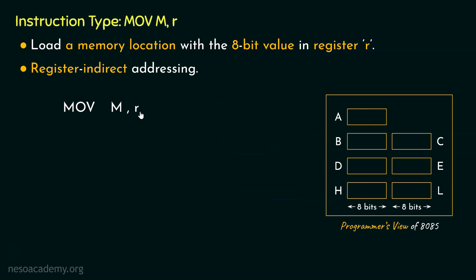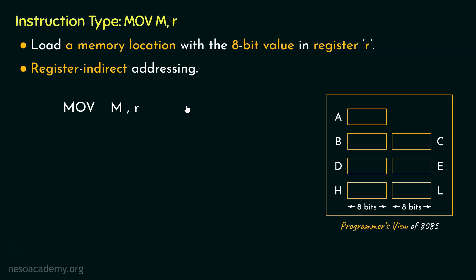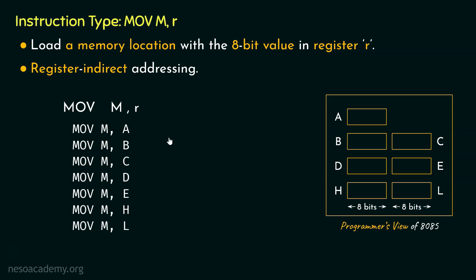The type MOV M,R also falls into the category of 1-byte long instructions. Since we have R in the instruction type, it is also going to have 7 different instructions. Do remember: MOV M,R uses register indirect addressing and its job is to load a particular memory location with the 8-bit value inside register R. This instruction also falls into the 1-byte long category.